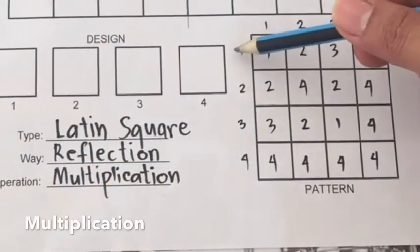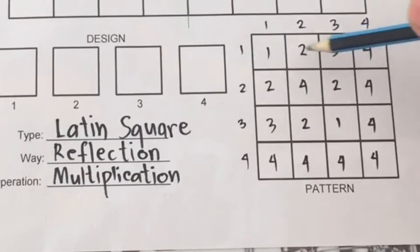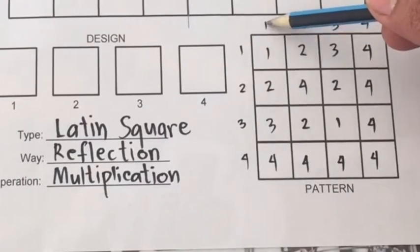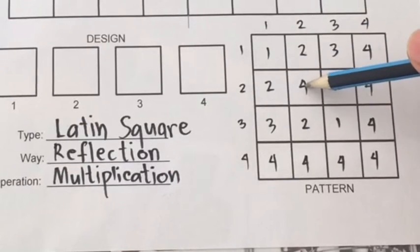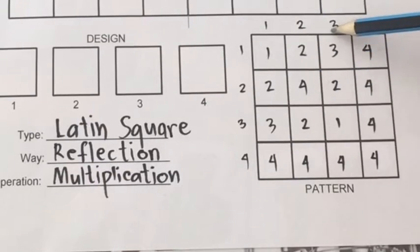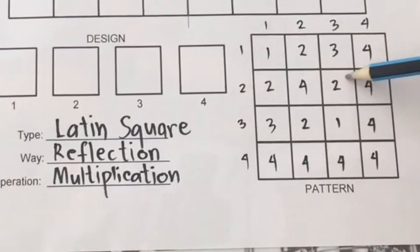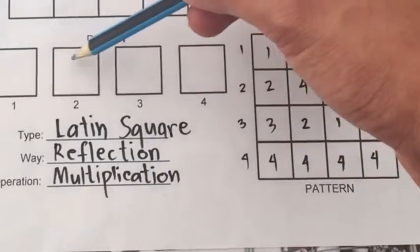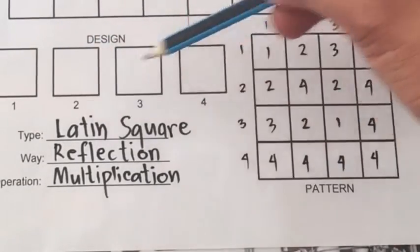1 times 1 is 1, 2 times 1 is 2, 3 times 1 is 3, 4 times 1 is 4. 1 times 2 is 2, 2 times 2 is 4. 3 times 2 is 6, but there's no 6 — counting 1, 2, 3, 4, 5, 6 — it's 2.